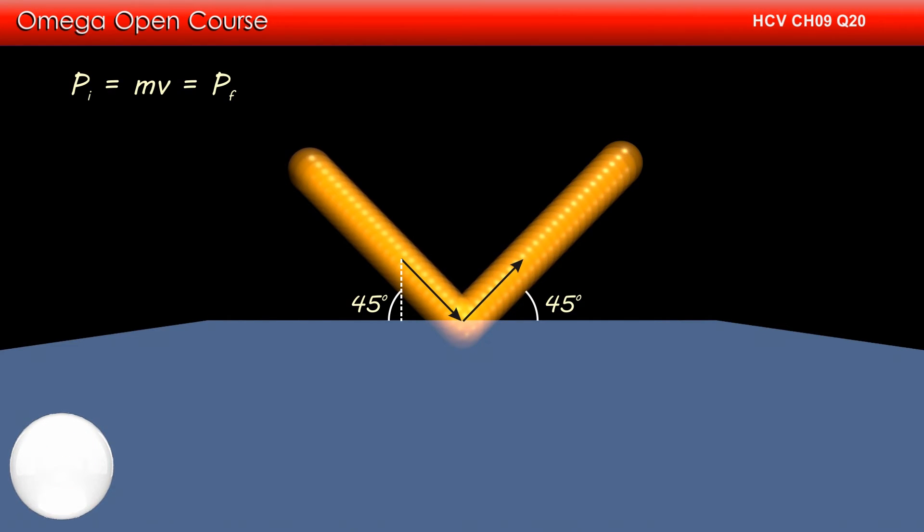The initial momentum of the ball is directed at an angle 45 degrees with the horizontal. Therefore, the horizontal component of this momentum is MV cos 45 degrees.